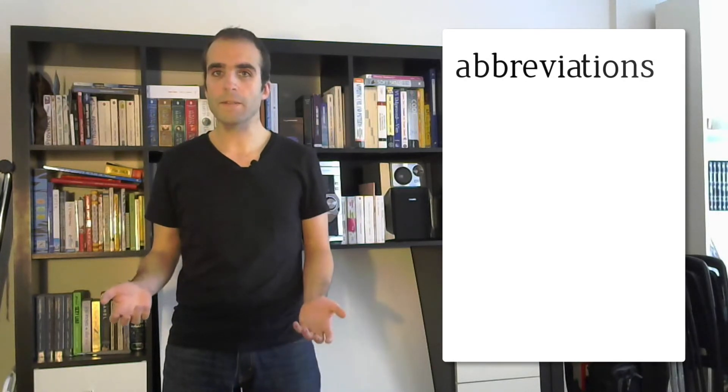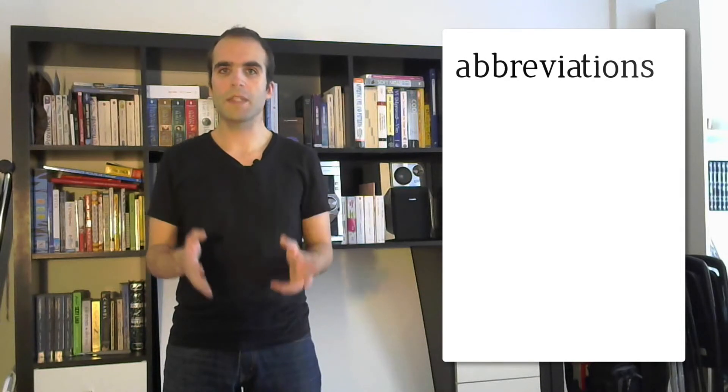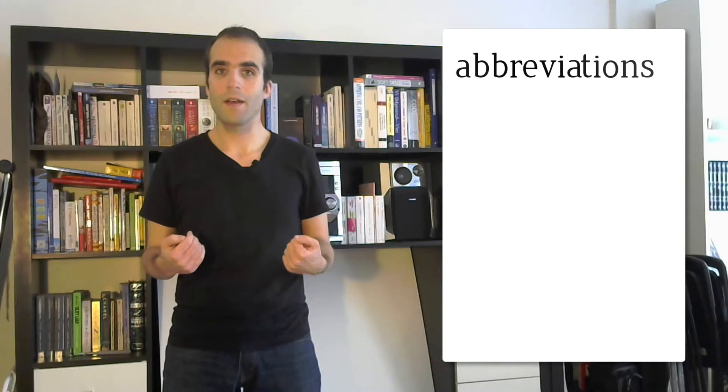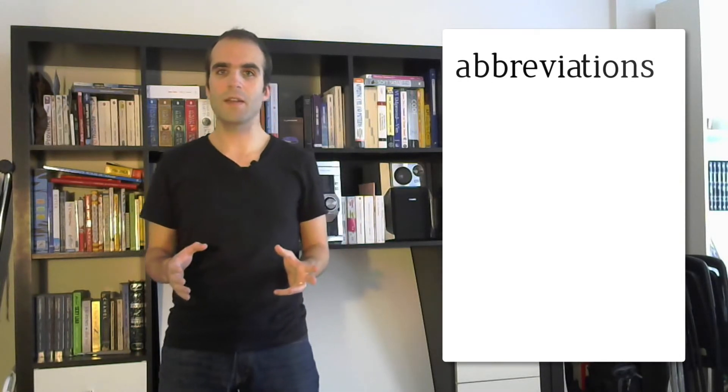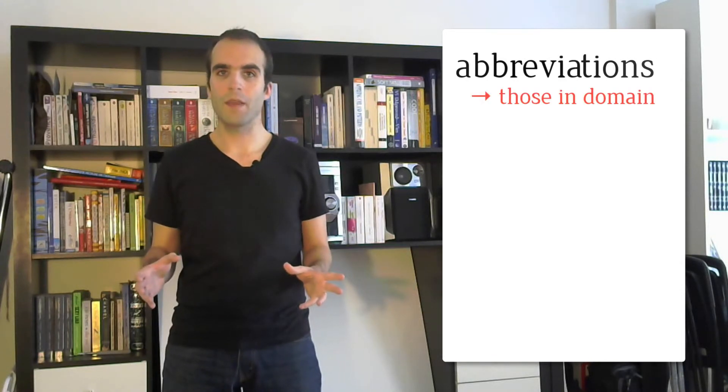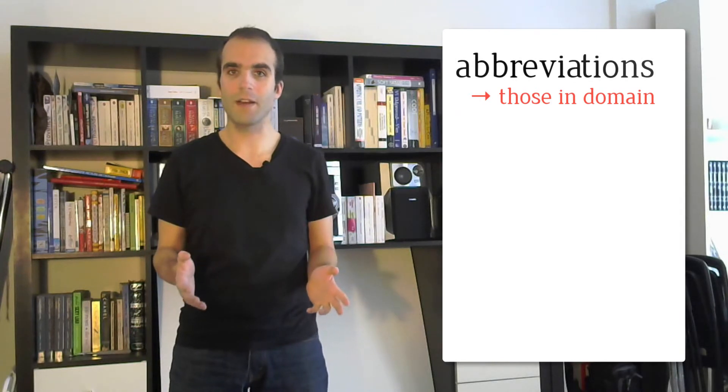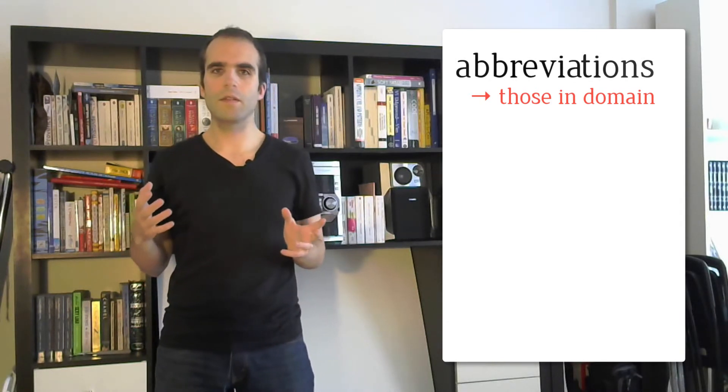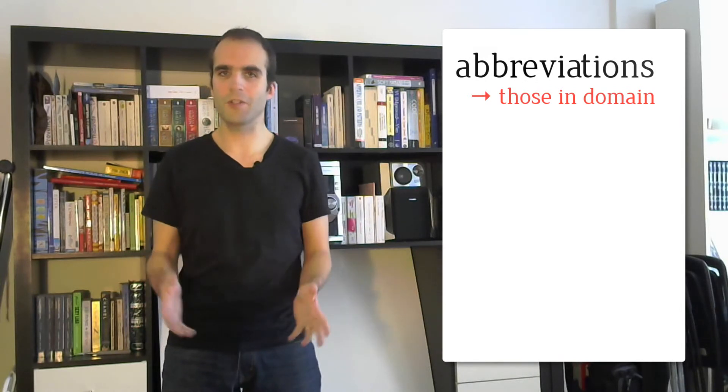One way to go about that is to check if one particular abbreviation can be understood by a user of the application. If it's the case, it means that this abbreviation is okay in the domain of your program. In this case, it makes sense that it's reflected in the code. If it's not related to the domain and no one understands it, then don't do it.